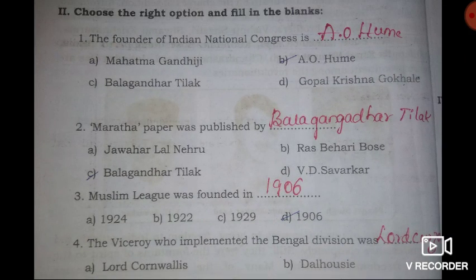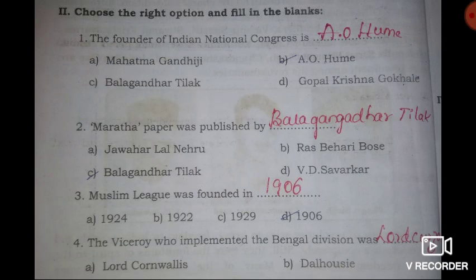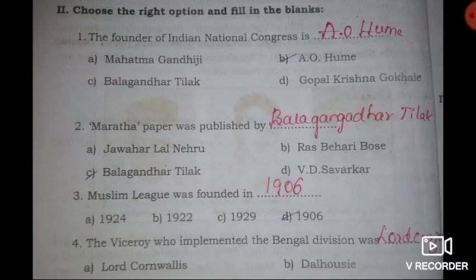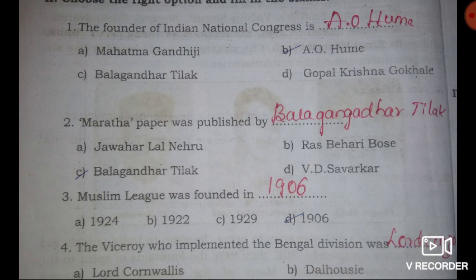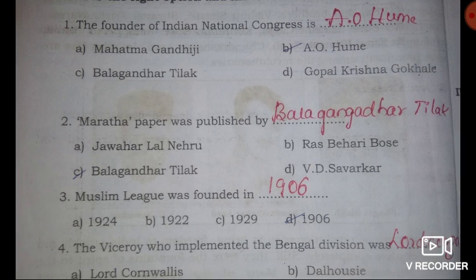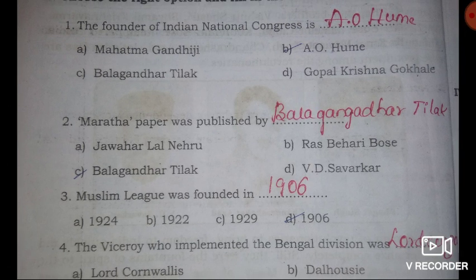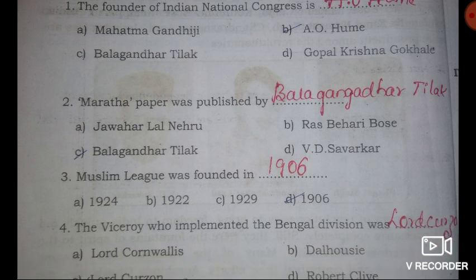The first section is choose the right option and fill in the blanks. Question one: the founder of Indian National Congress is — option A: Mahatma Gandhi, option B: A.O. Hume, option C: Bal Gangadhar Tilak, option D: Gopalakrishna Gokhale. The right answer is A.O. Hume. A.O. Hume is the founder of Indian National Congress.